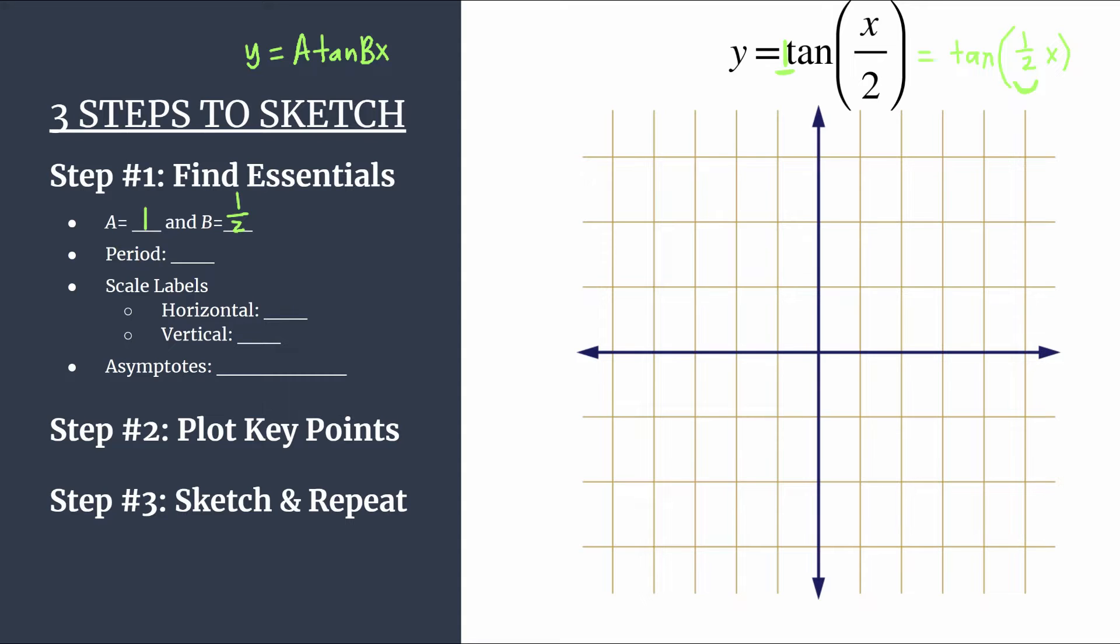And another important thing to note, b can tell us how many cycles happen between zero and pi. So when we have our graph finished, we should look at it and check, do we see half of a cycle happening between zero and pi? It's really a good double check that you have a correct graph.